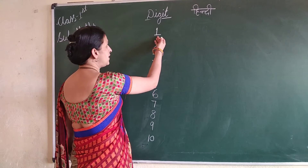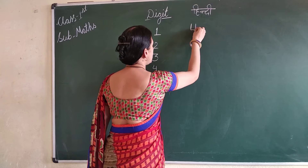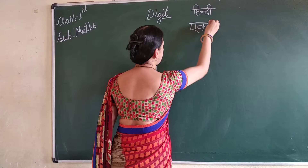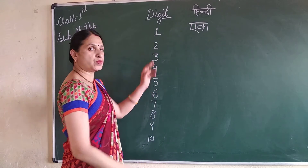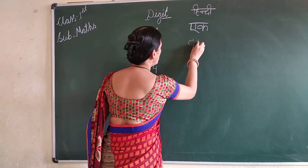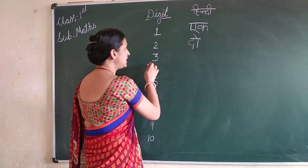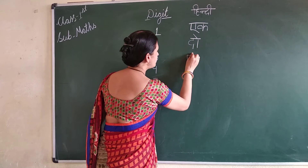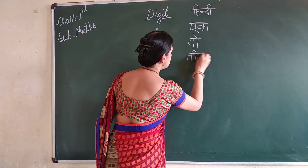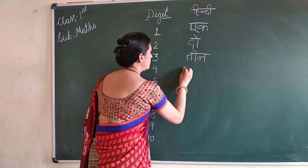One. What do we call one in Hindi? One. Two. Two. Three. Three. Four. Four.